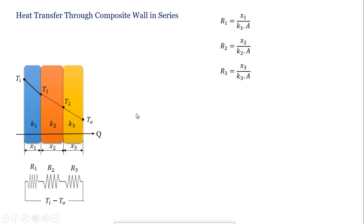When walls are in series, the total resistance equals R1 plus R2 plus R3. This gives Q equals Ti minus To divided by the sum of R. Therefore, Q equals Ti minus To divided by R1 plus R2 plus R3.